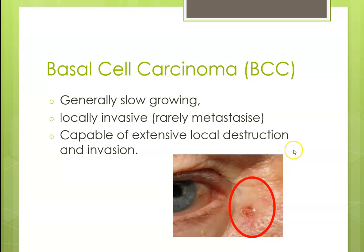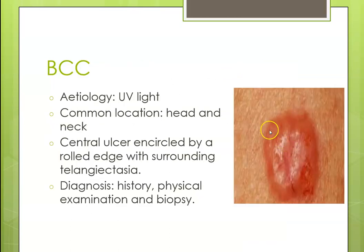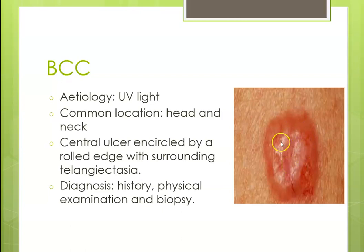Basal cell carcinoma is usually a slow-growing tumor that is locally invasive and can disrupt underlying structures. The etiology is sun exposure, and it commonly occurs around the head and neck. The specific characteristic is an ulcer at the center with a rolled edge surrounding it and the presence of telangiectasia.